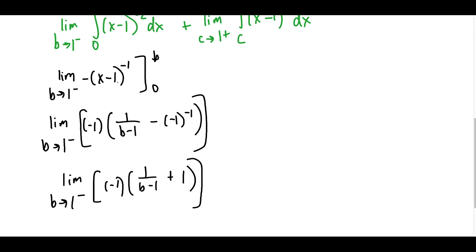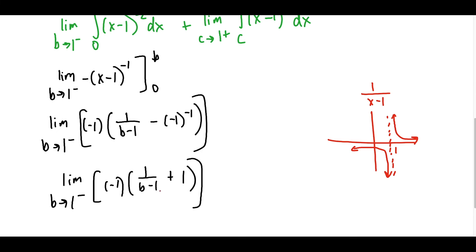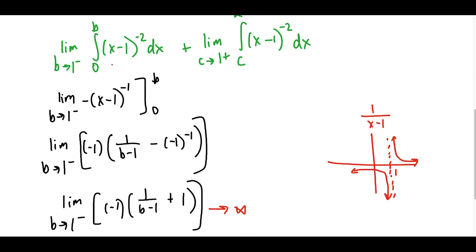To evaluate this, think about the graph of 1 over x minus 1 — the easiest way to read limits. On the left side of 1, this graph is heading down to negative infinity. So 1 over B minus 1 approaches negative infinity, and multiplying by negative 1 gives positive infinity. So this limit diverges — it's heading towards positive infinity. What we can conclude is that if just one of the pieces diverges, the entire integral that we started with diverges as well.